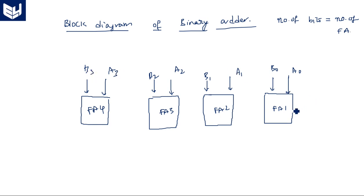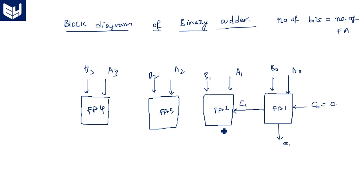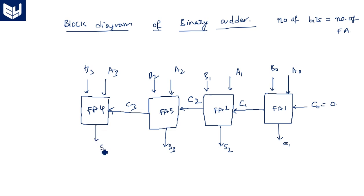The inputs to the full adders are: A0, B0 for FA1; A1, B1 for FA2; A2, B2 for FA3; A3, B3 for FA4. The first carry input C0 is set to zero. The carry output of FA1 feeds as carry input to FA2, and similarly carry propagates through each stage, producing S1, S2, S3.